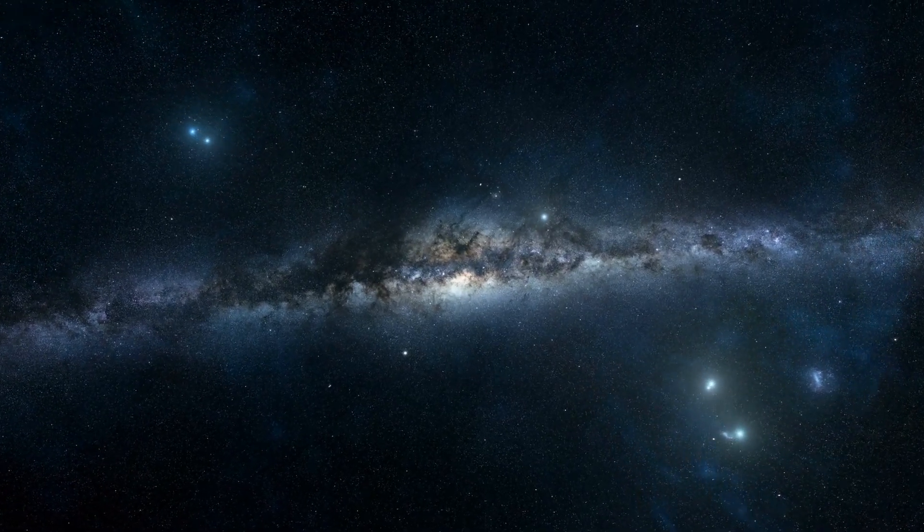One possibility is that an unknown mechanism may have supercharged the process of star formation in the early universe. This may explain why these early galaxies appear so massive and luminous. But another theory suggests that black holes in the early universe may have played a role in this phenomenon. It's believed that these black holes could have grown massive in short time frames, leading to the formation of many massive galaxies that we observed today.